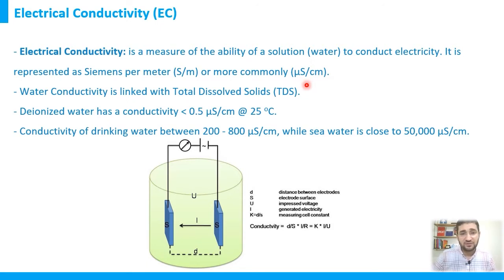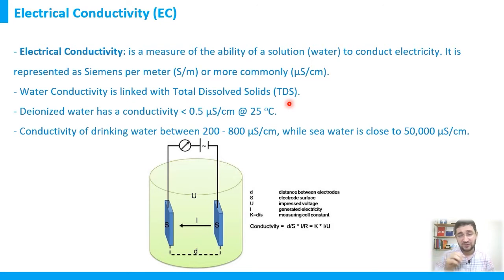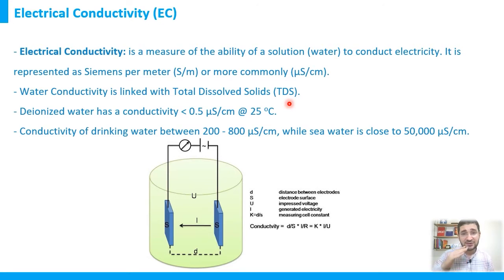Electrical conductivity is well connected with TDS. If we have higher levels of salts dissolved in the water, those salts have a higher ability to transfer electrical charge between the two electrodes. As a rule of thumb, when TDS — total dissolved solids — of your water increases, the electrical conductivity increases as well. Conversely, if the electrical conductivity increases, that means you have a higher level of dissolved solids in your water.